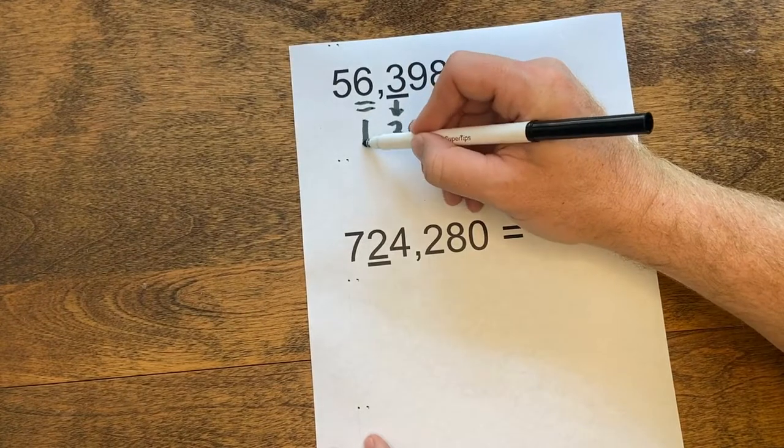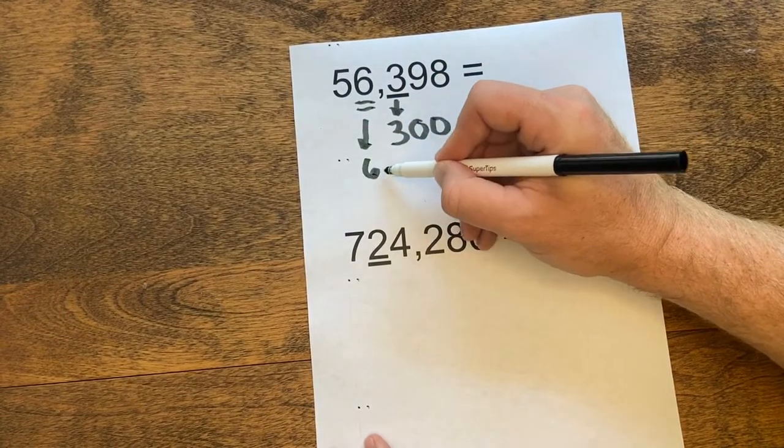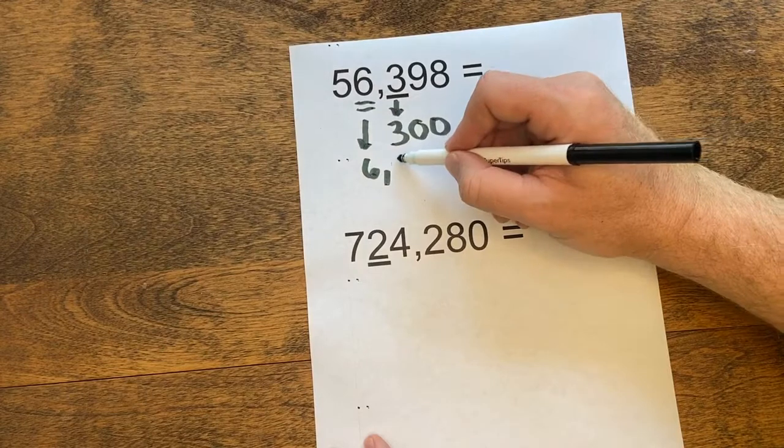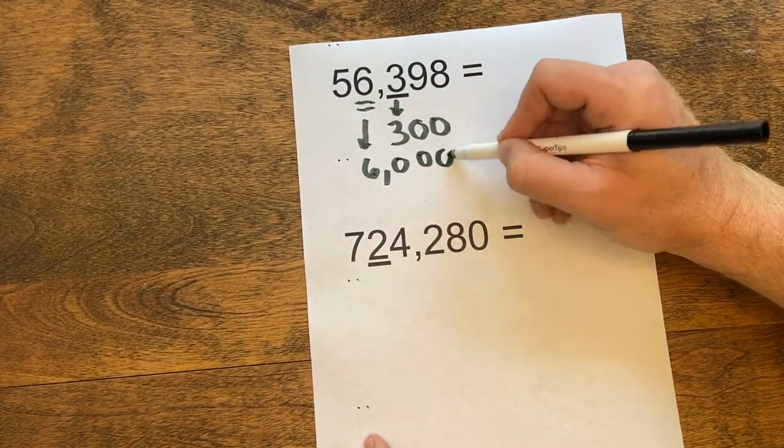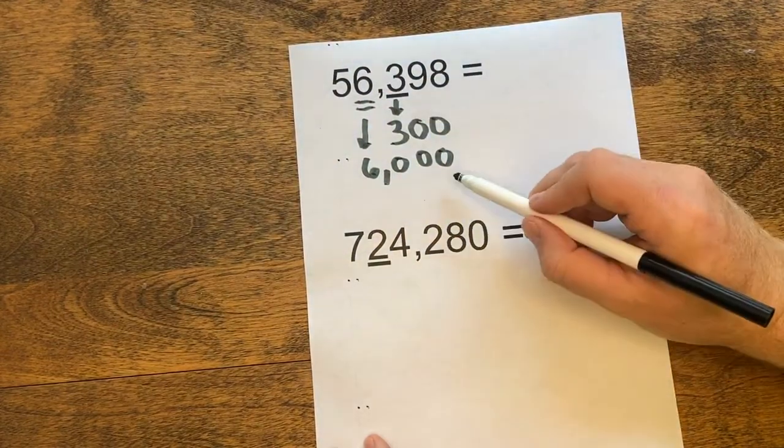We'll bring the 6 down. It's in the thousands place. We'll add zeros in the other place value spots, so the value of that 6 is actually 6,000.